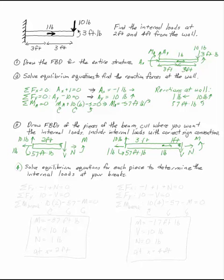Step 4 is to sum the forces and moments for each of my pieces. So if I take the sum of the forces in x, I have minus 1 plus n equals 0. The sum of the forces in y gives me 10 pounds up, minus v equals 0.